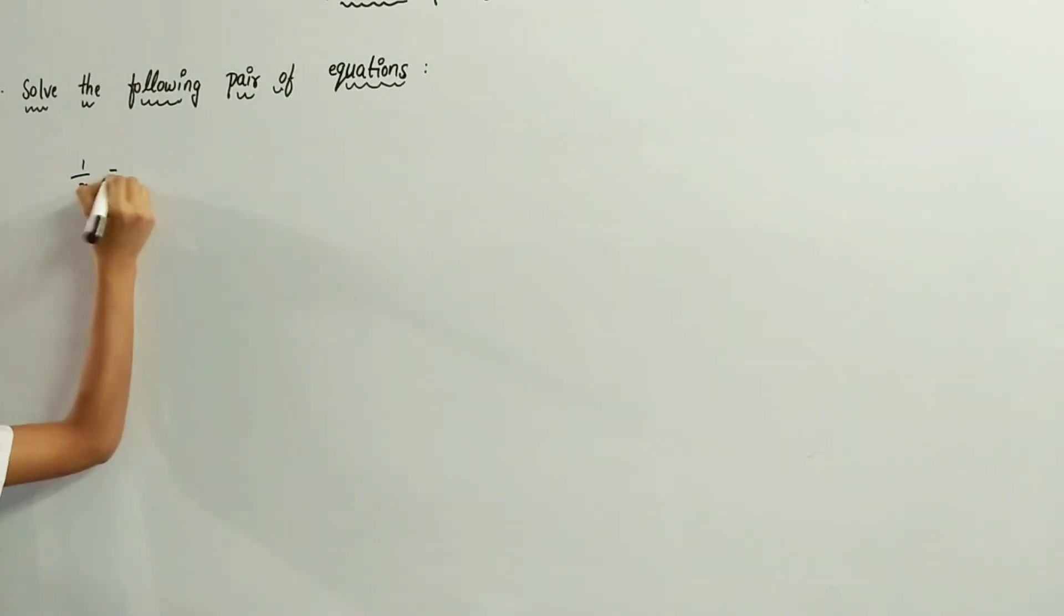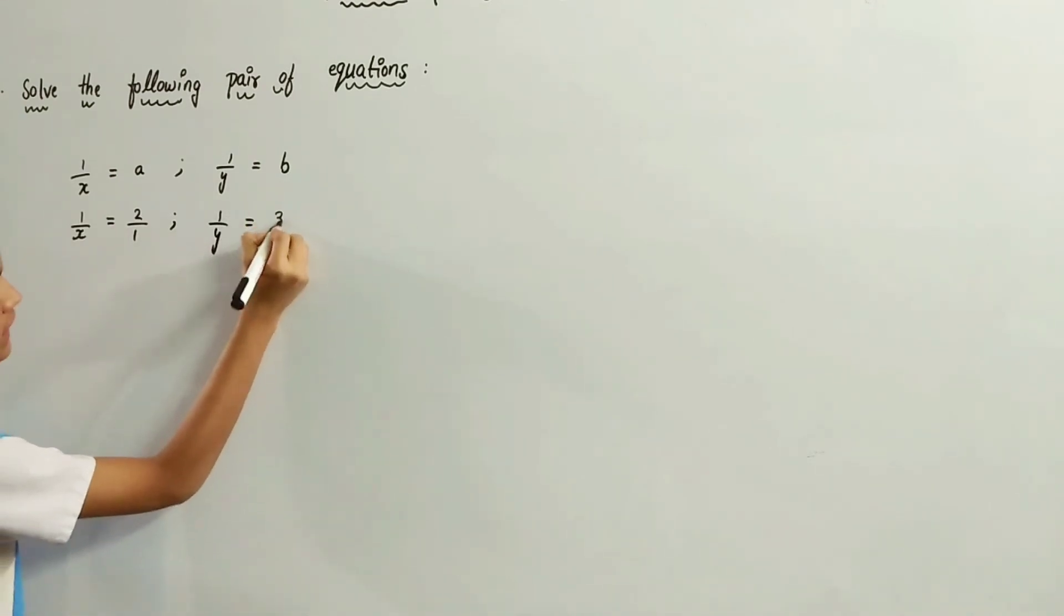1 by x equals a, and 1 by y equals b. 1 by x equals 2, and 1 by y equals 3. By cross multiplying, we get 2x equals 1. Here also, by cross multiplying, we get 3y equals 1.